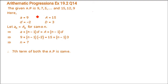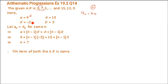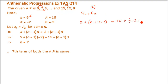If the nth term of the AP 9, 7, 5 is the same as the nth term of the AP 15, 12, 9, find n. Both have the same nth term. So for the first AP, a is 9 and d is 7 minus 9, that is minus 2. For the second AP, a is 15 and d is 12 minus 15, that is minus 3. Now equate the nth terms: 9 + (n−1)(−2) equals 15 + (n−1)(−3).